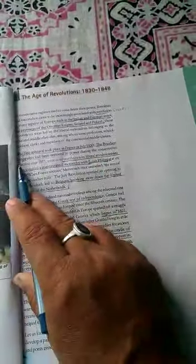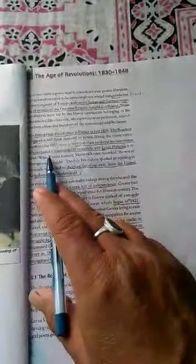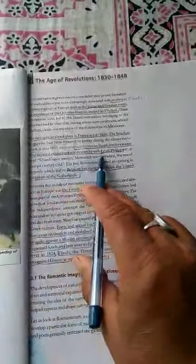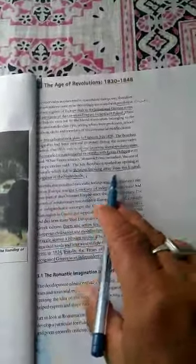The Bourbon king was overthrown by liberal revolutionaries who installed a constitutional monarchy with Louis Philippe. Belgium broke away from the United Kingdom of the Netherlands.